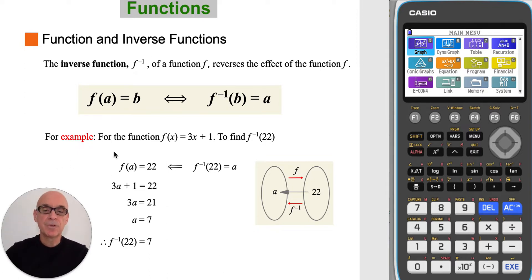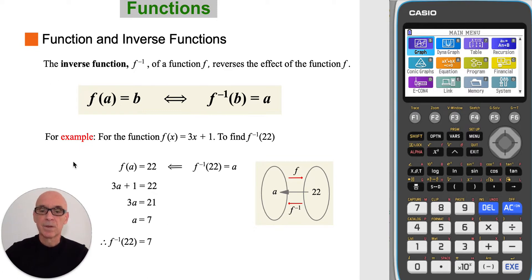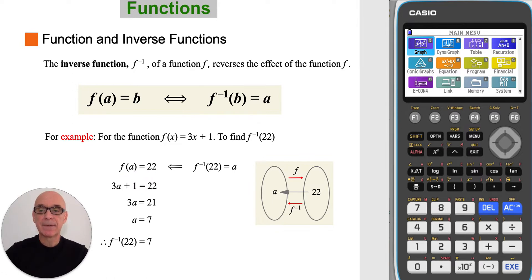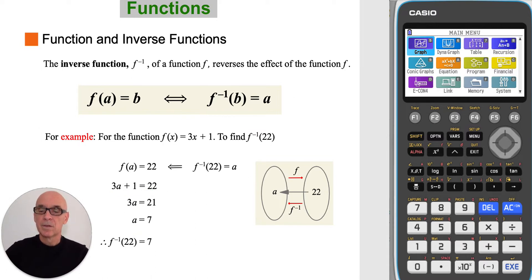In the example shown, given f of x, we're asked to find inverse f of 22. So if inverse f maps 22 to a, then f of a must equal 22, as can be seen in the mapping diagram. So we equate f of a equal to 22 and we solve the equation, giving 7. So inverse f of 22 is equal to 7.